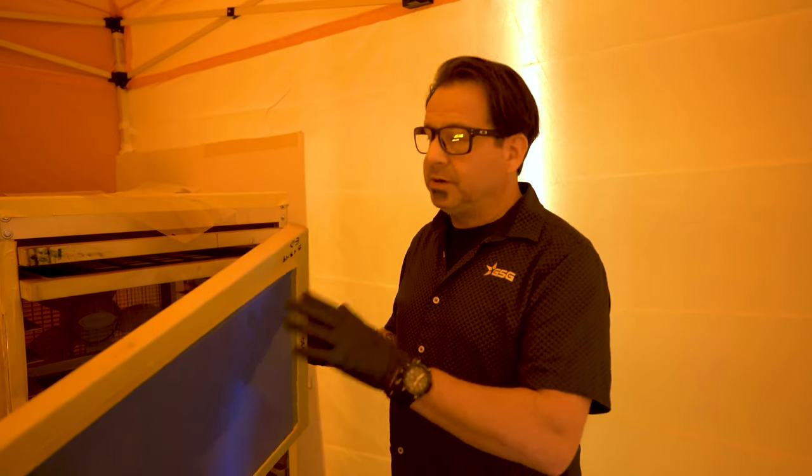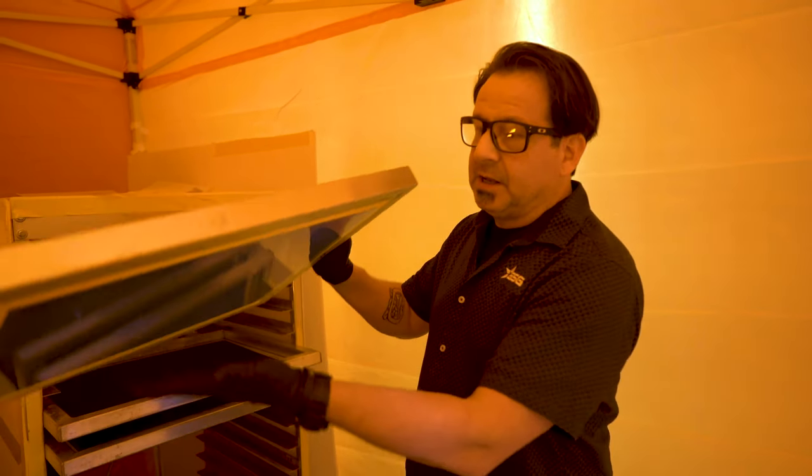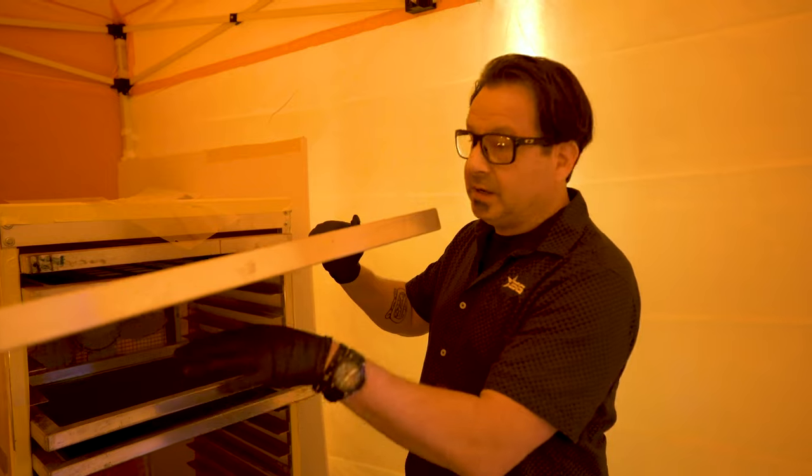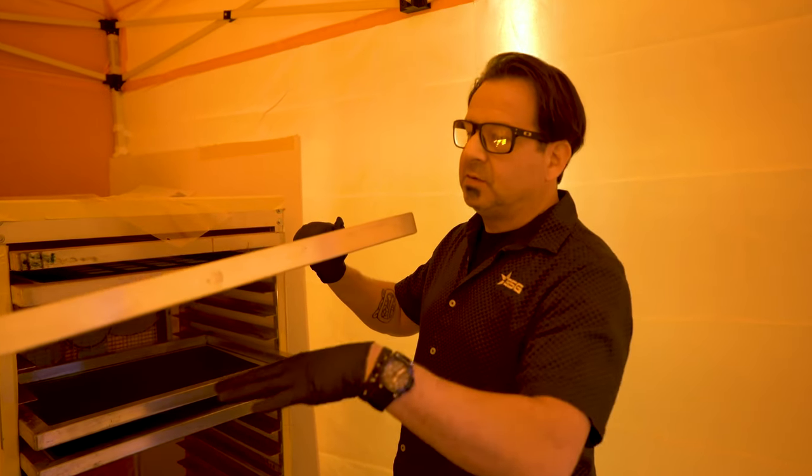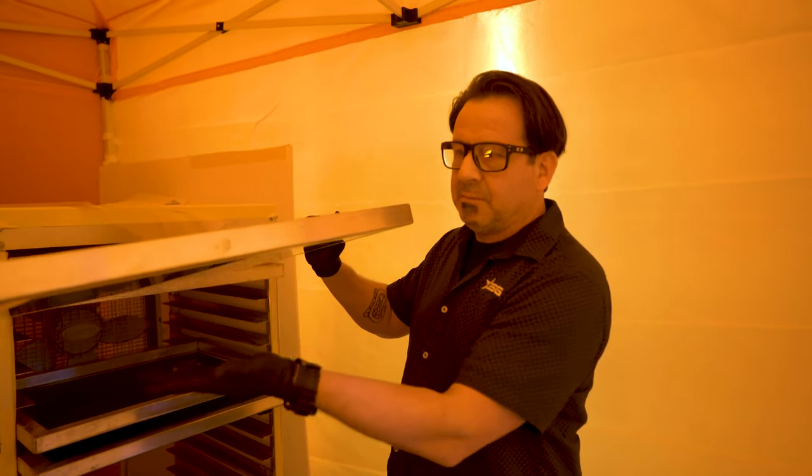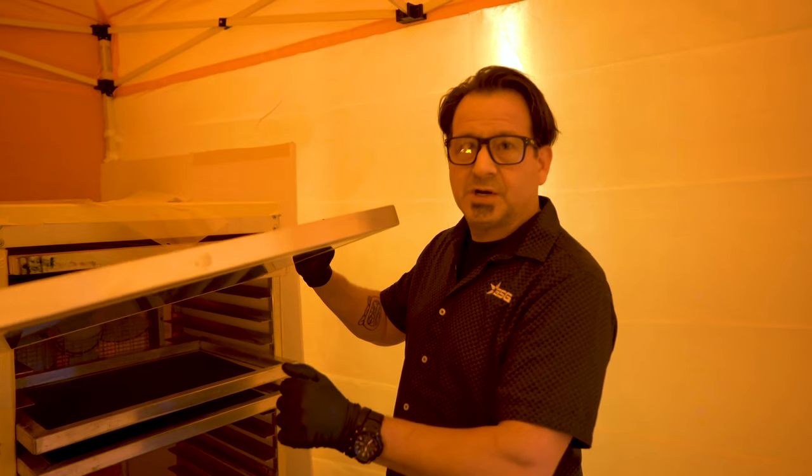One thing you want to make sure that you do when you're drying your screens is place the shirt side of the screen in the down position. This will allow our emulsion to level off and build our stencil on the substrate side.